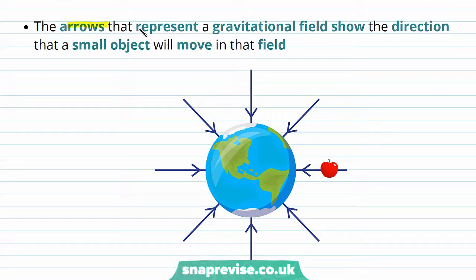The arrows on the lines of the gravitational field show the direction that a small object will move in that field. So for example, this apple is going to fall towards the Earth because the arrow is pointing towards the Earth.